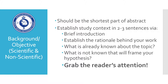Next is the background or objective section, which applies to both scientific and non-scientific abstracts. It should be the shortest part of your abstract, consisting of roughly two to three sentences. This should include a brief introduction to your topic and establish the rationale behind your work. It is also important to clearly state the aim or hypothesis, and it should grab your reader's attention and leave them wanting to read more.